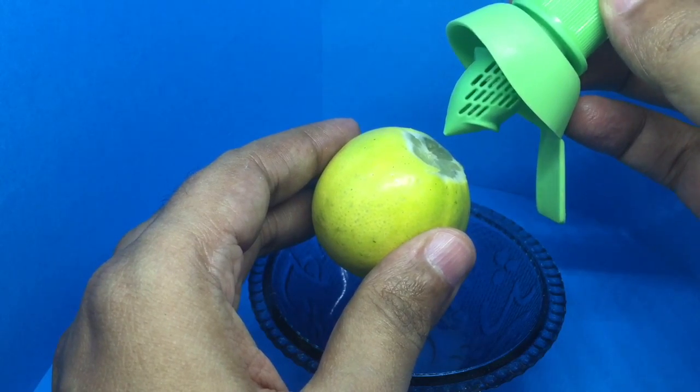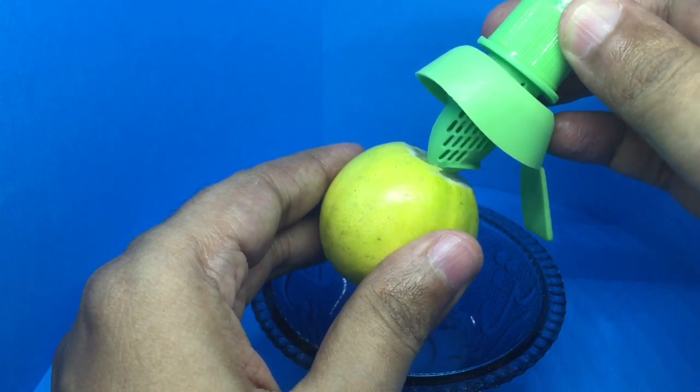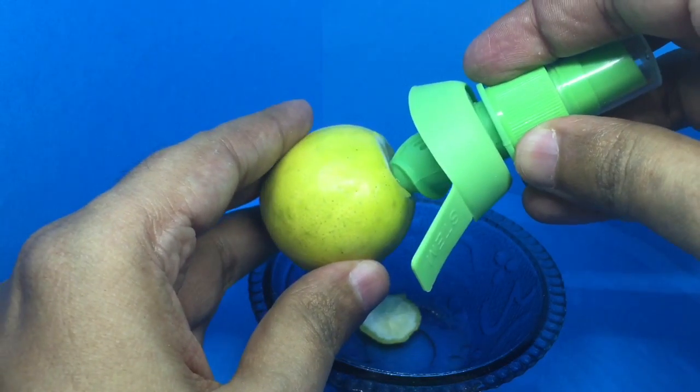Now take this citrus sprayer and position it like this and keep twisting.